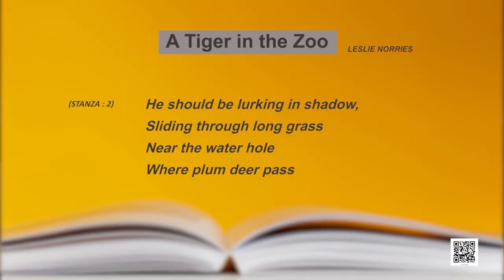Now the second stanza: 'He should be lurking in shadow, sliding through long grass, near the water hole where plump deer pass.' The tiger is in the wild now — in the jungle. What does he do? He is sliding through long grass, walking through the forest, hiding to watch the deer. The deer will be his prey. He is waiting to attack his prey.